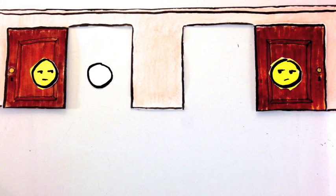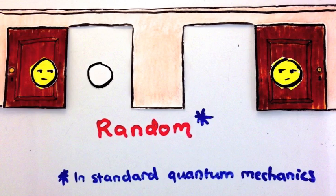Standard quantum mechanics says that this is truly random. Unlike in classical physics, there is no extra information you could get or extra calculations you could do that could let you predict which it will be.